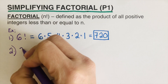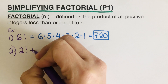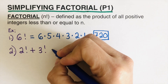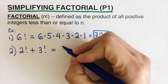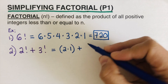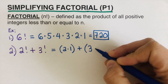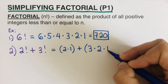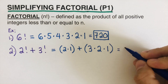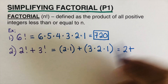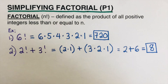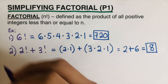Let's look at another example: 2 factorial plus 3 factorial. We simplify each factorial separately. 2 factorial is 2 times 1, and 3 factorial is 3 times 2 times 1. That gives us 2 plus 6, so the answer is 8.